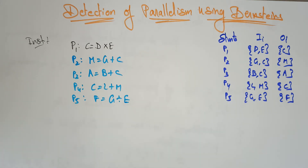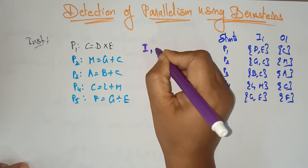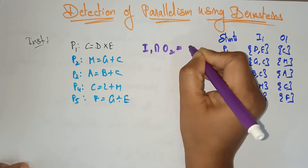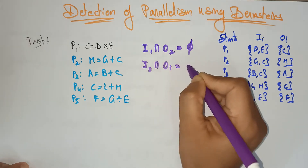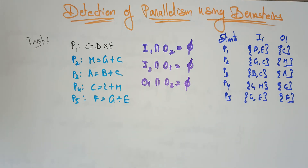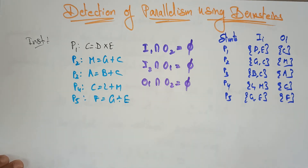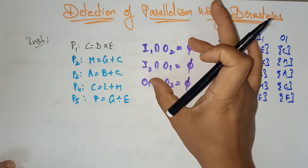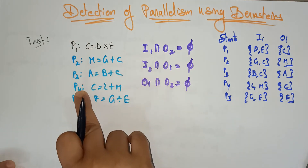Now apply the Bernstein conditions. The three conditions are: I1 ∩ O2 = ∅, I2 ∩ O1 = ∅, and O1 ∩ O2 = ∅. Intersection means there should be no common element — if there are no common elements it is an empty set. Now apply the conditions to all statements P1, P2, P3, P4, P5.